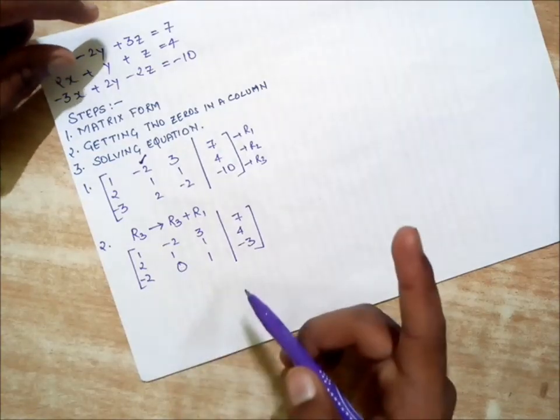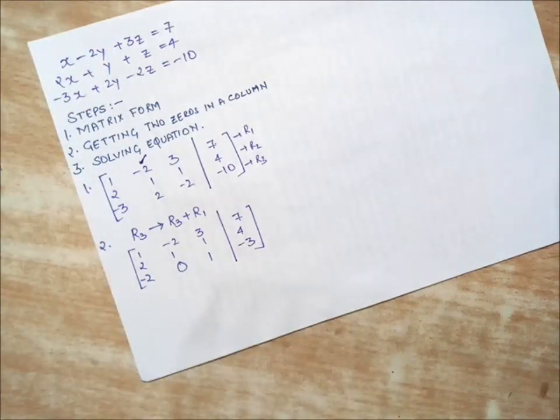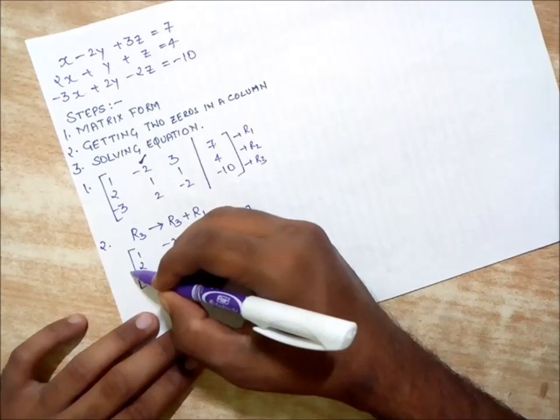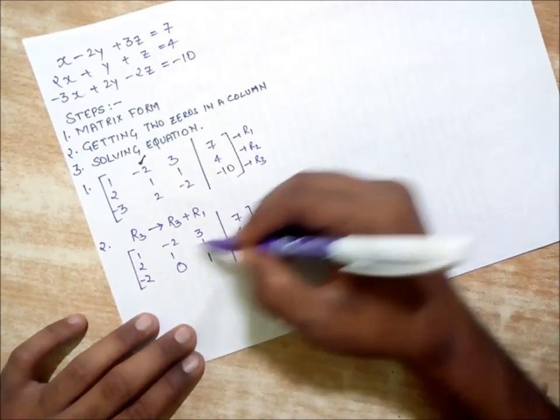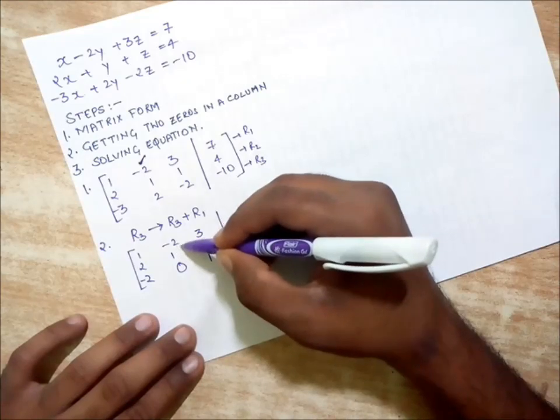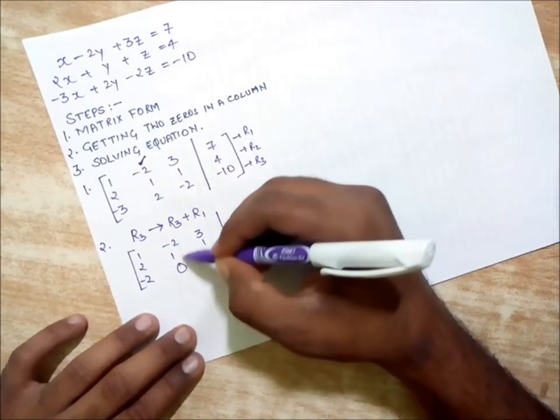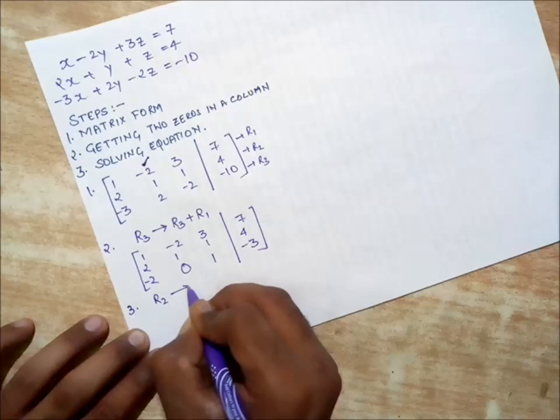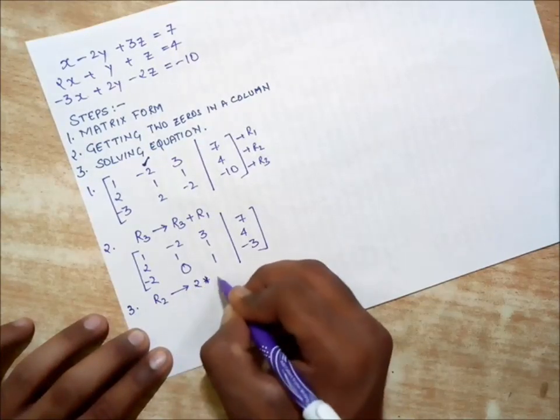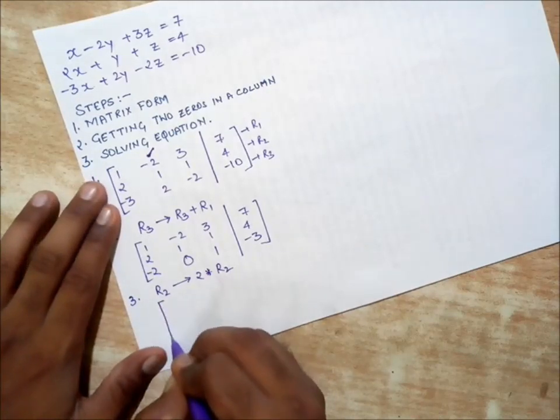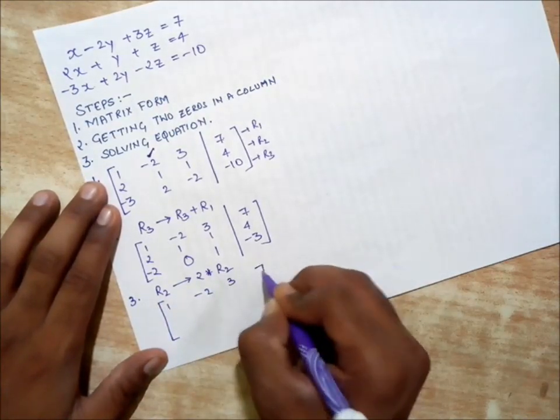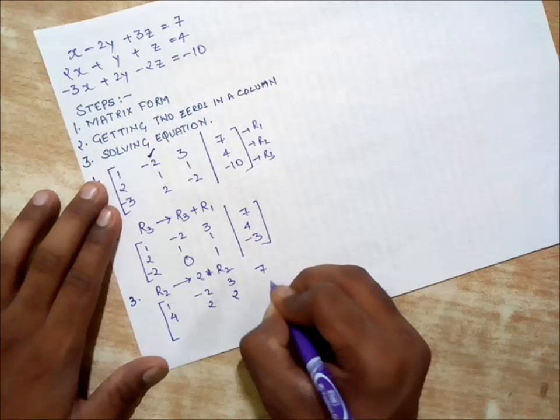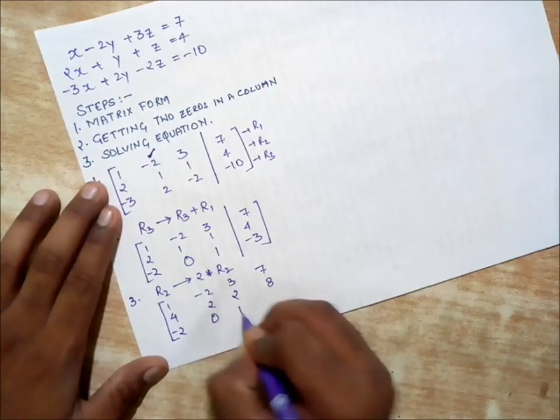I need one more zero in this column. I do have a multiple over here because if I multiply row two with two and then add these two, I'll be getting another zero. So row two is going to be two multiplied by row two. First row remains the same. Row two multiplied with two gives 4, 2, 2, and 8. Row three remains the same.